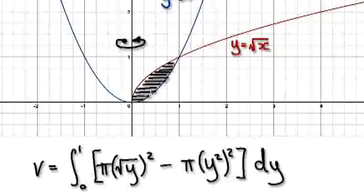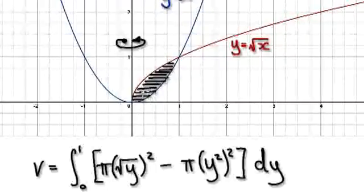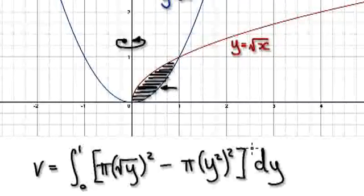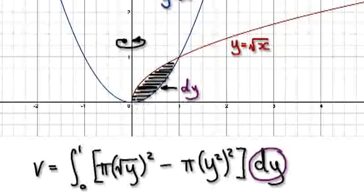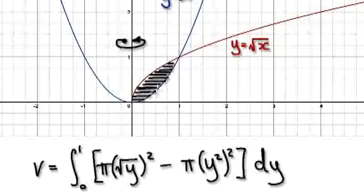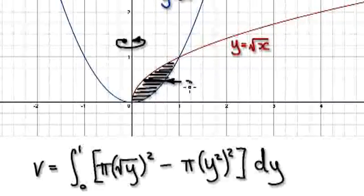So now let's look at it from the other method. The other method would be us summing up all the washers. So we are summing up all the washers here. Let's just look at this particular washer right here. The thickness associated with this washer would be dy — the thickness here would be dy. Remember, you're moving up in the y direction.